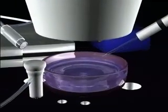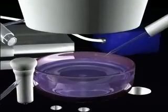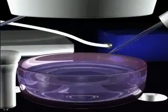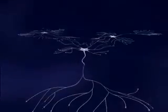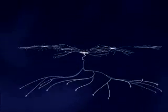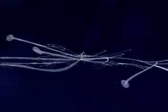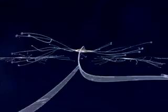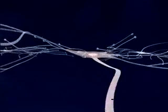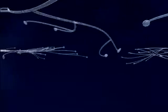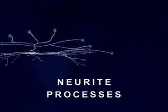To better understand mercury's effect on the brain, let us first illustrate what brain neurons look like and how they grow. In this animation, we see three brain neurons growing in a tissue culture, each with a central cell body and numerous neurite processes.